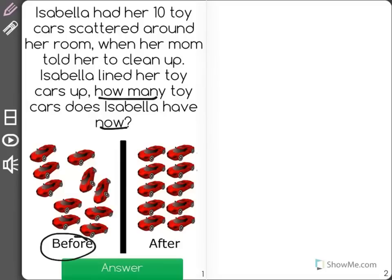So it says before and after. I know when it wants to know how many cars Isabella has now, it's talking about after she cleans up her room. Now if she had 10 toy cars to start with before, we can count them.